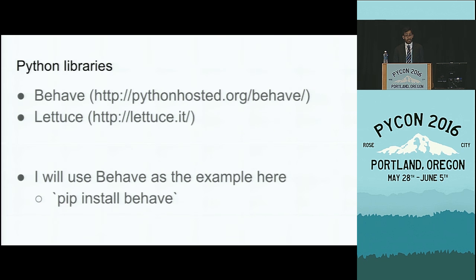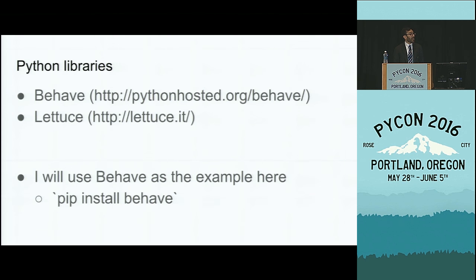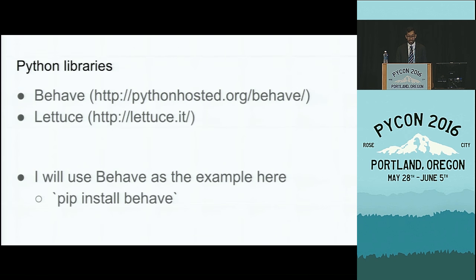So now let's look at some code. I've found that there are a lot of libraries that implement this kind of Cucumber stuff. Two of them that seem actively maintained and very popular, as defined by lots of stars on GitHub, are Behave — a play on behavioral-driven development — and Lettuce, because lettuce and cucumbers are both salad-related things. For the examples here, I'm going to use the Behave library. I flipped a coin; these two libraries have very similar syntax, so whichever one you use, it's not so different.